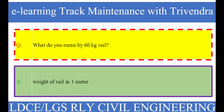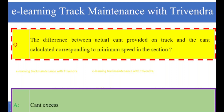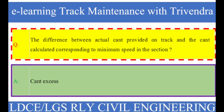Question number 70: The difference between actual cant provided on track and the cant calculated corresponding to minimum speed in a section. The right answer is cant excess.